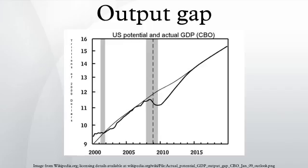The percentage GDP gap is the actual GDP minus the potential GDP, divided by the potential GDP. February 2013 data from the Congressional Budget Office showed that the United States had a projected output gap for 2013 of roughly $1 trillion, or nearly 6% of potential GDP.